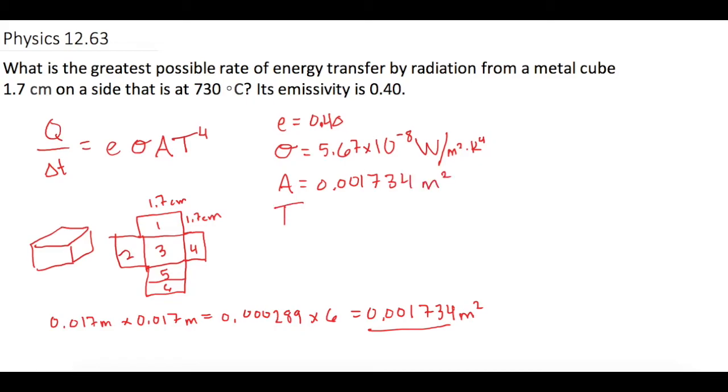And now we need the temperature which they give us as 730 degrees Celsius. And we need to put that in kelvin. And in kelvin it is 1003.